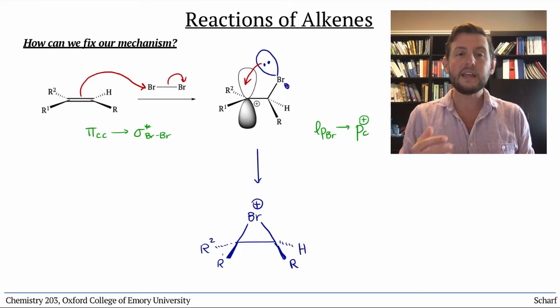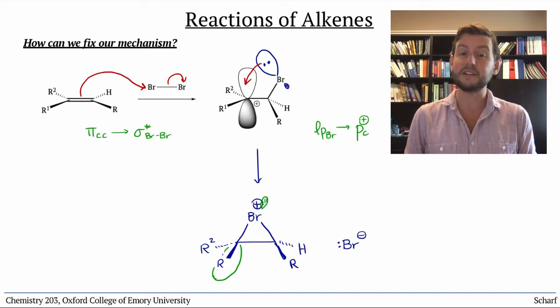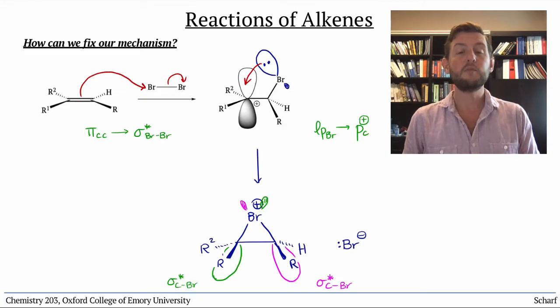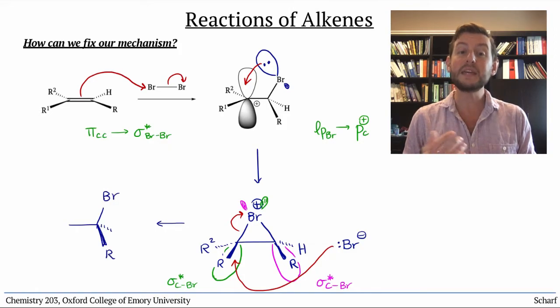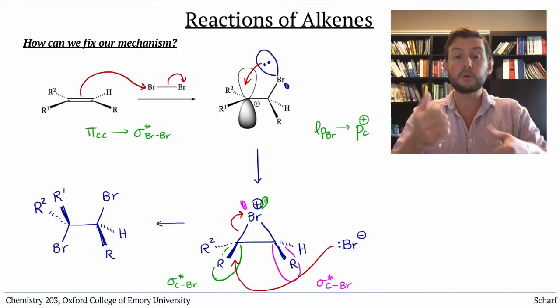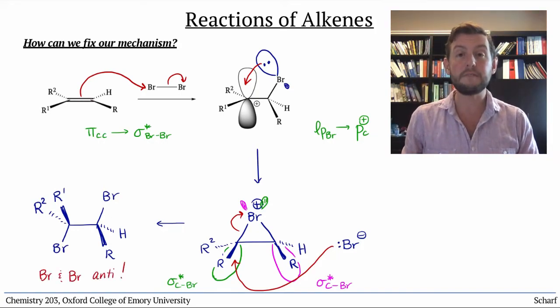Then, if the Br- that's still floating around came by wanting to donate into something, the only available acceptor orbitals would be σ* CBr, which we know are largest here, on the opposite side from where the first bromine is. If Br- goes ahead and adds into one of those sigma star orbitals, then we get the observed stereochemical outcome. The bromines add anti in a stereospecific way.